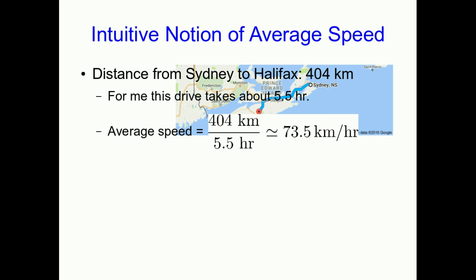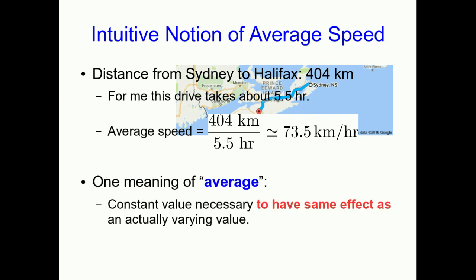Well, does that mean I went 73.5 kilometers per hour the whole way? Well, certainly not. As I was driving through Sydney, the police would have been awfully annoyed with me if I was going that fast. And on the stretch of the Trans-Canada between New Glasgow and Truro, everyone else would have been extremely annoyed with me if I was driving at that speed. The point is, this is the average. And aside from just thinking about speed, this also gives us a way of thinking about what average means. It's the constant value that would have the same effect as an actual varying value. The speed I was actually going was varying. But if I had gone at a constant 73.5 kilometers per hour, it would have had the same effect - I would have got from Sydney to Halifax in the same amount of time, assuming the police didn't pull me over.